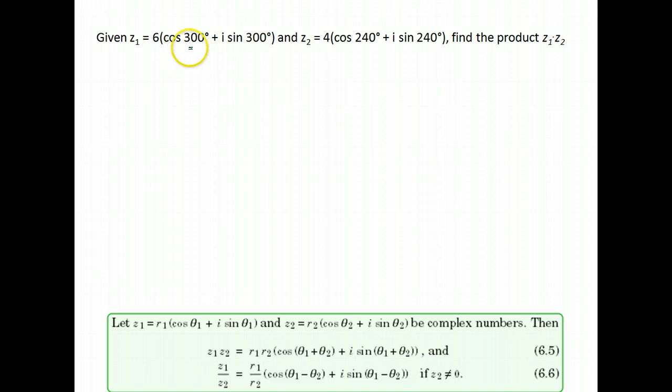In this lesson we're going to work on multiplying two complex numbers that are written in trigonometric form. Here we're given two numbers: 6 times cosine 300 plus i sine 300, and our second number is 4 cosine 240 plus i sine 240.